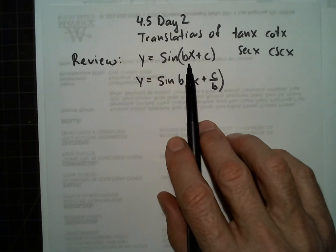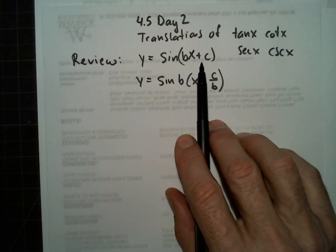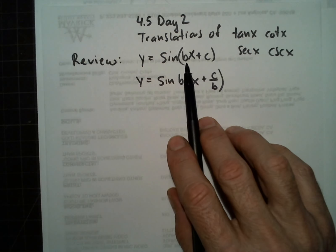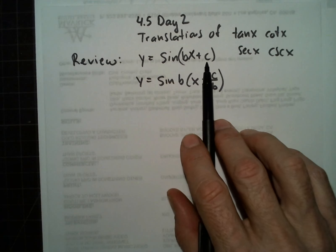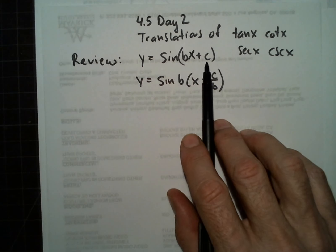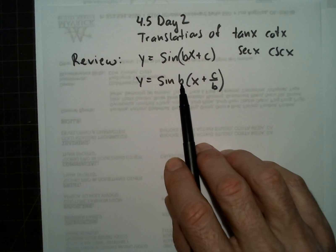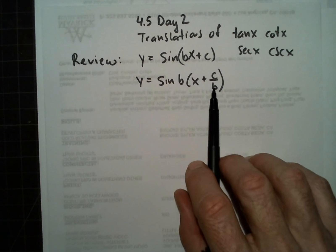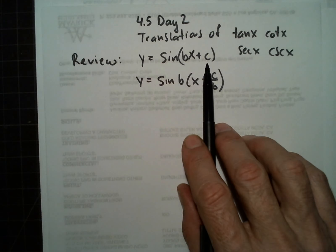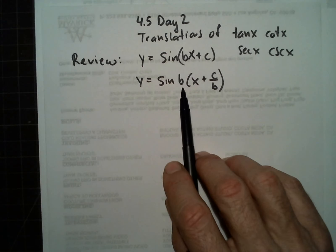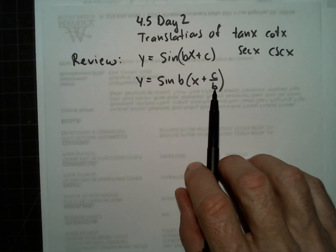Remember that if you have bx plus c, b and c are inside or horizontal changes, but we can't use this as the horizontal change translation until we factor out the b. So we have to take a b out. If you distributed b times c over b, it would take you back to where you started, so we know that this is correct. Now we can see that there's the dilation and the translation.